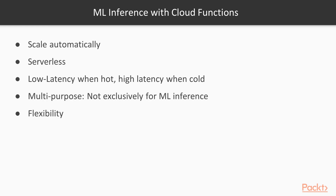So what does this mean for machine learning inference with cloud functions? Scalability is not an issue — cloud functions work completely serverlessly and scale automatically. They have very low latency when hot, but high latency when cold. They are multipurpose, so not exclusively for ML inference, but that also makes them quite flexible. Everything that runs within around 30 seconds should work fine with cloud functions. But don't try to put heavy workloads on there that run several minutes.